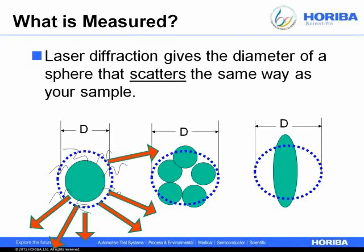Laser diffraction gives you the diameter of a sphere that scatters the same way as your sample. For a sphere with a hairy shell, the shell doesn't scatter strongly, so you get a size close to the core. If your emulsion starts to flocculate, you measure the size of coalesced droplet clusters. For non-spherical droplets, you get an average size. This is important to keep in mind when interpreting data, particularly when comparing to dynamic light scattering results.